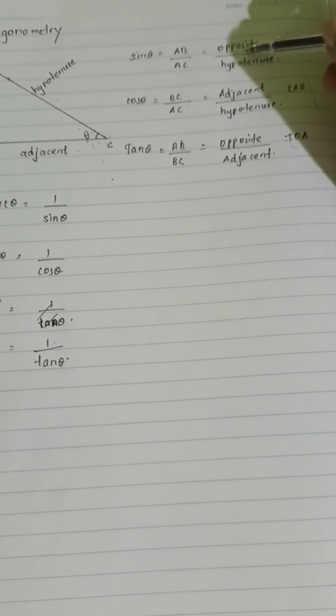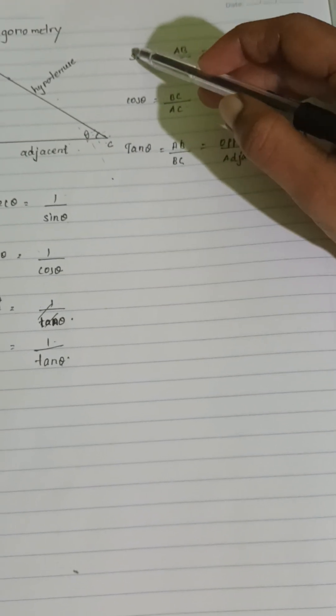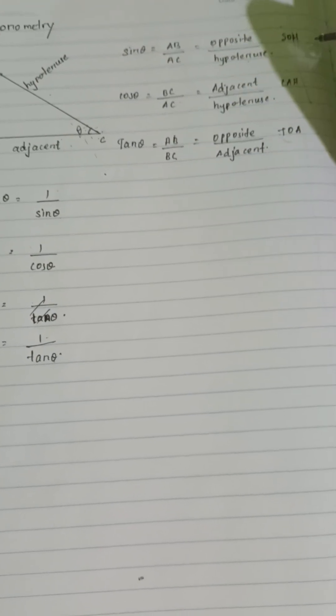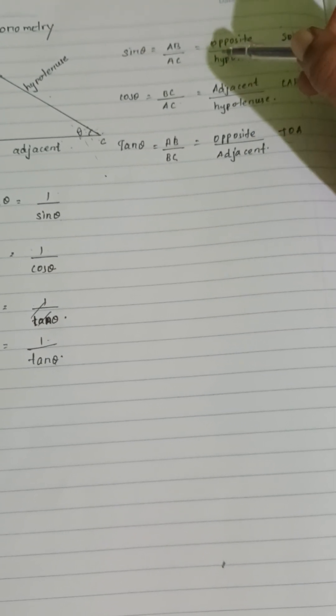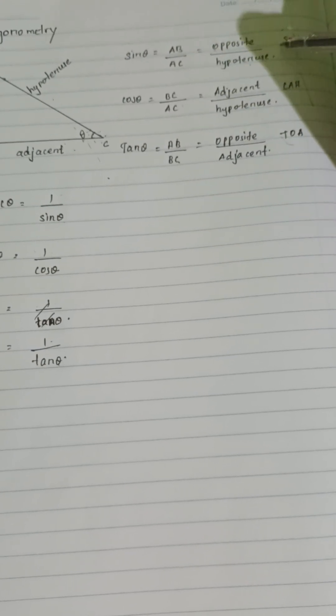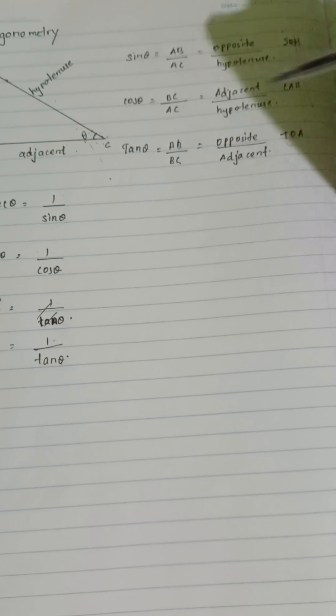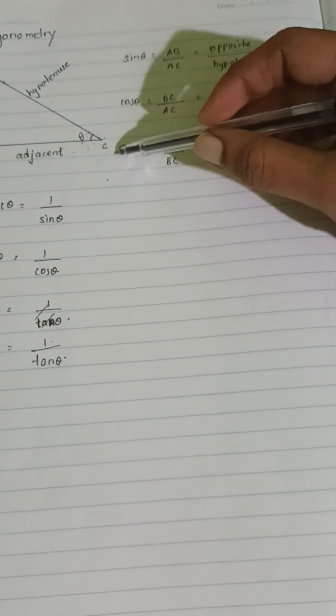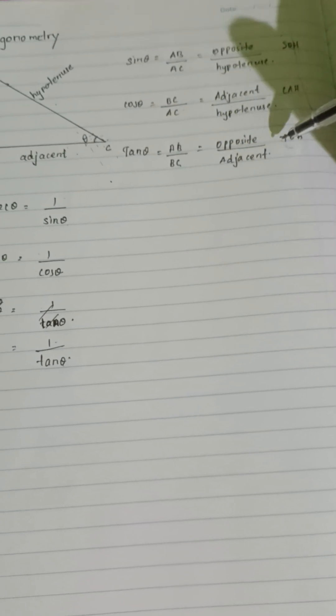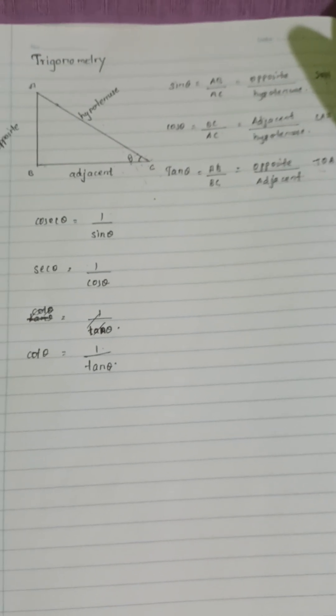Sin theta equals opposite over hypotenuse. The first letter of sin is S, opposite is O, hypotenuse is H - that's SOH. Cos theta the same way is CAH (adjacent over hypotenuse). Tan theta is TOA (opposite over adjacent). This is the trigonometry basics.